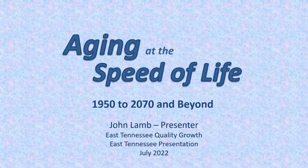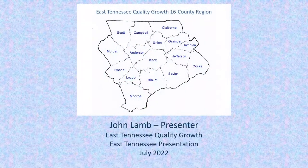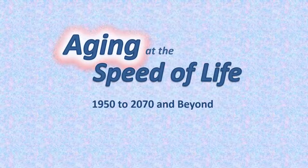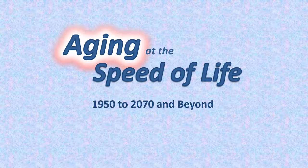Welcome to this presentation of Aging at the Speed of Life, prepared specifically for the 16-county East Tennessee region as continuing outreach by East Tennessee Quality Growth, and as an updated and focused companion to the Population at the Speed of Life video series available on the Quality Growth YouTube channel. The aging of our population has been and continues to be an important transformation within our community.